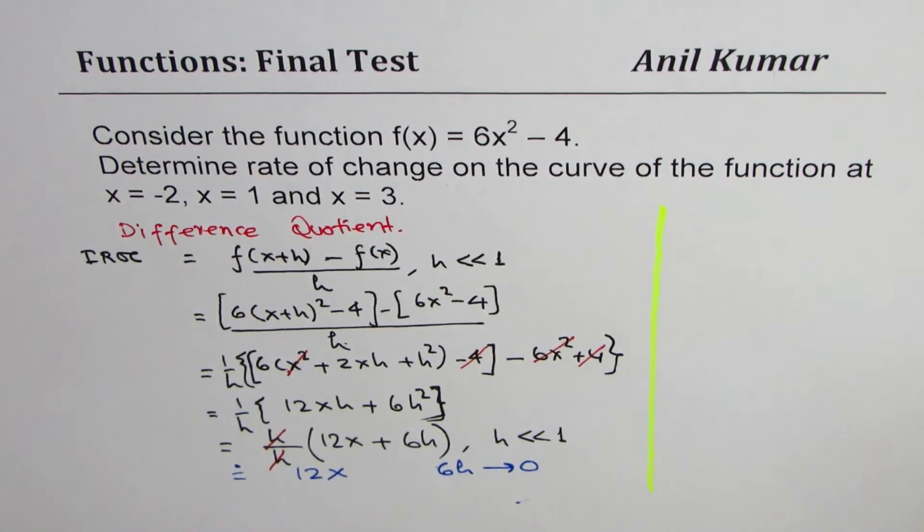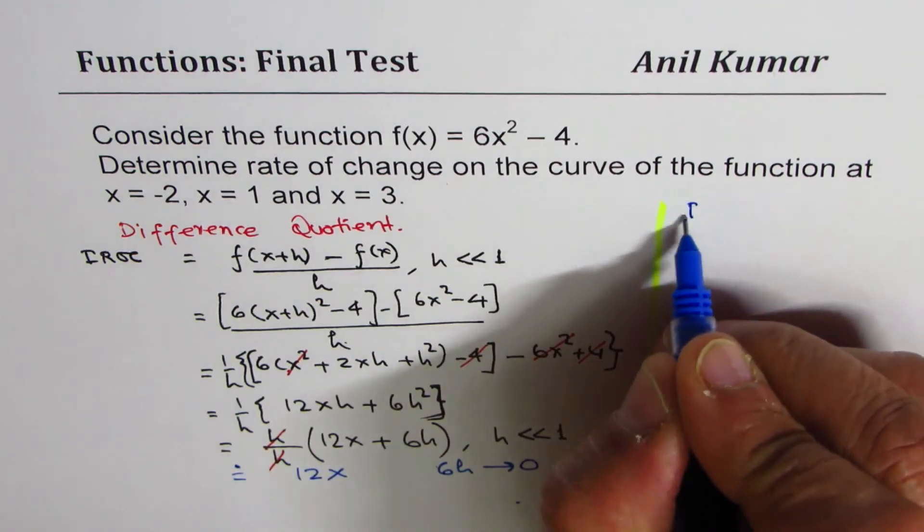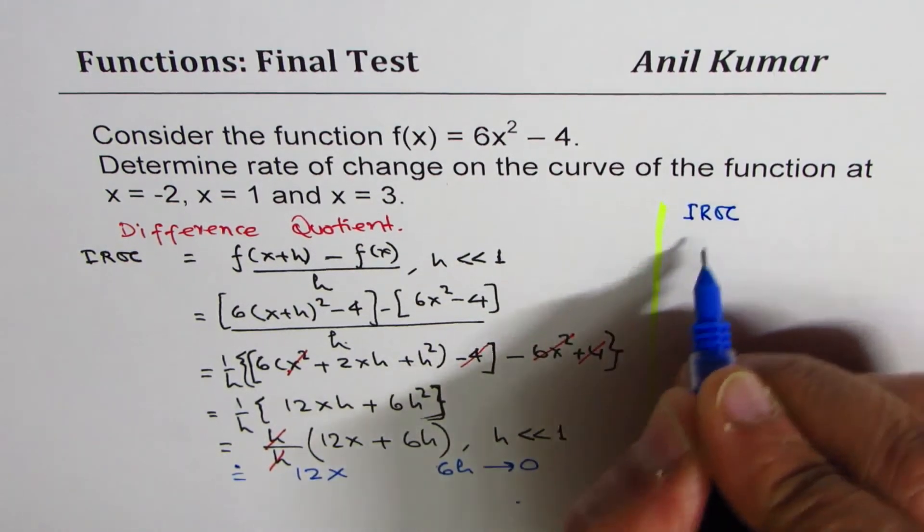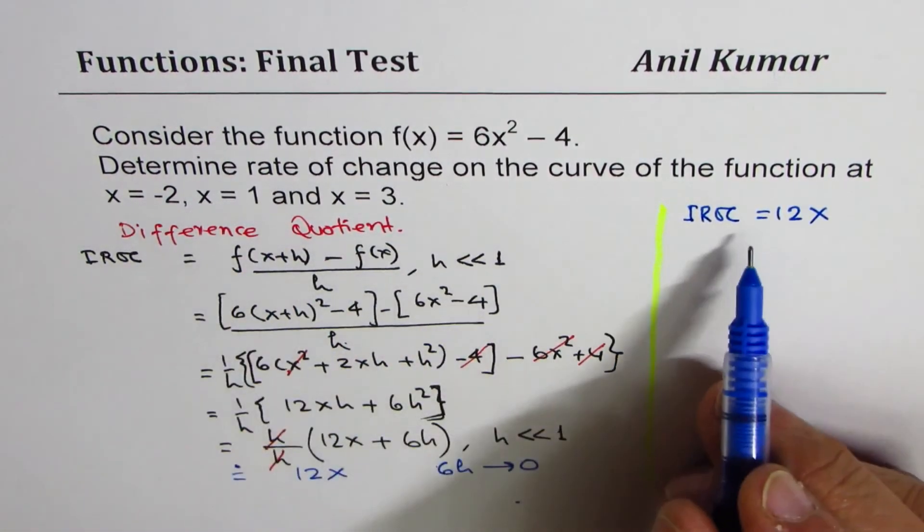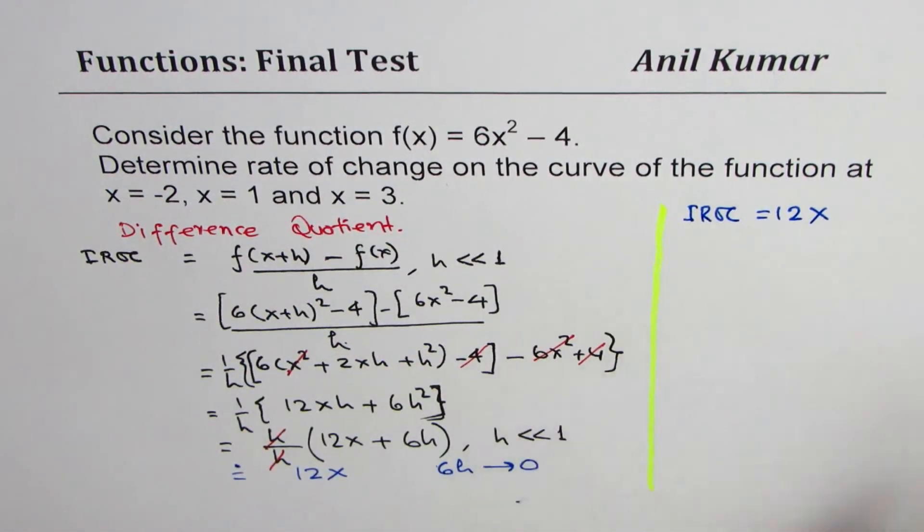Now, we know that instantaneous rate of change at any point for the given function is equal to 12x. So at different values of x, we can substitute and find the answer.